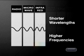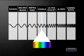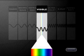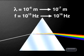Notice that as the wavelengths are getting shorter, so the frequencies are getting higher. Next, we have visible light. This region of the electromagnetic spectrum can be broken down into a range of different colors of light, from red to violet. The visible light spectrum has wavelengths ranging from 10 to the minus 6 meters for red light to 10 to the minus 7 meters for violet light, with frequencies ranging between 10 to the 15 hertz for red light and 10 to the 16 hertz for violet light.